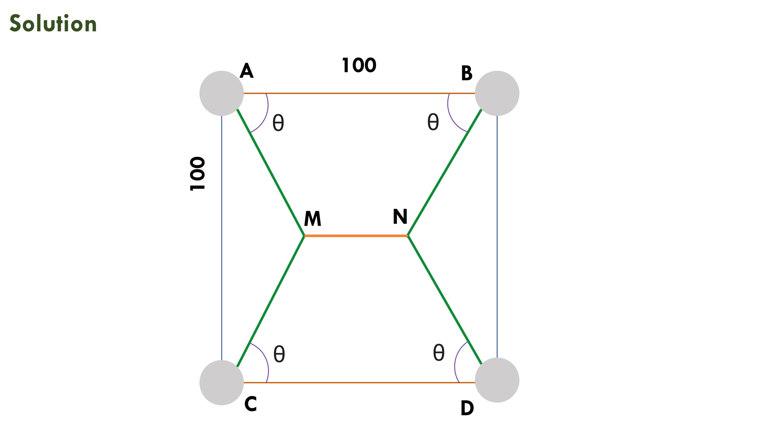Now let's try to find out the value of this angle theta so that this plan has length shorter than the X plan. We'll have to employ the method of minima to find it out. For this we need to find the total length AM plus BN plus CM plus DN plus MN.